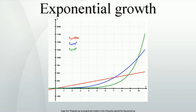Many responses of living beings to stimuli, including human perception, are logarithmic responses, which are the inverse of exponential responses. The loudness and frequency of sound are perceived logarithmically, even with very faint stimulus, within the limits of perception. This is the reason that exponentially increasing the brightness of visual stimuli is perceived by humans as a linear increase rather than an exponential increase. This has survival value, as it is important for organisms to respond to stimuli across a wide range of levels, from very low to very high.